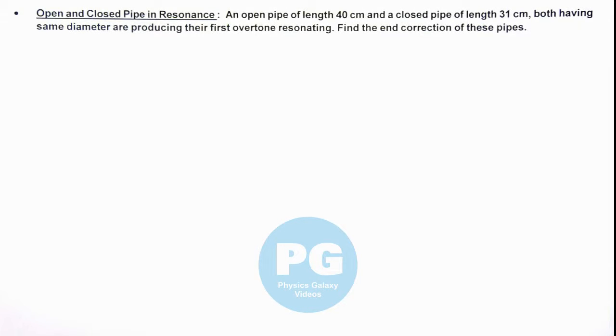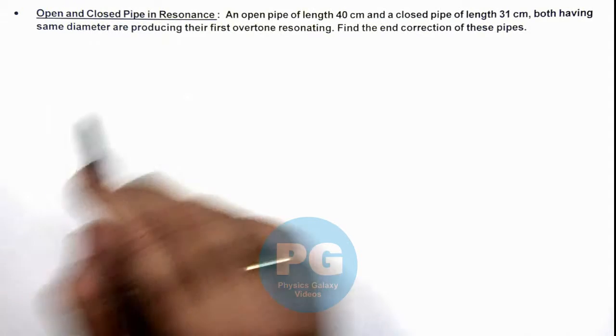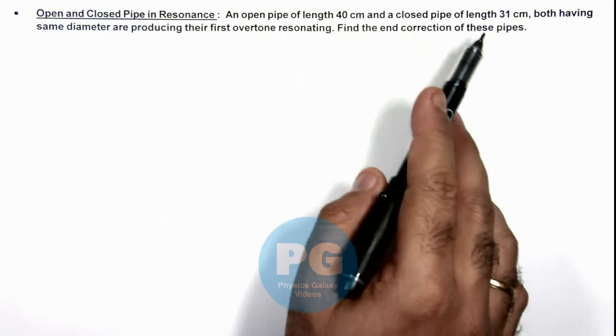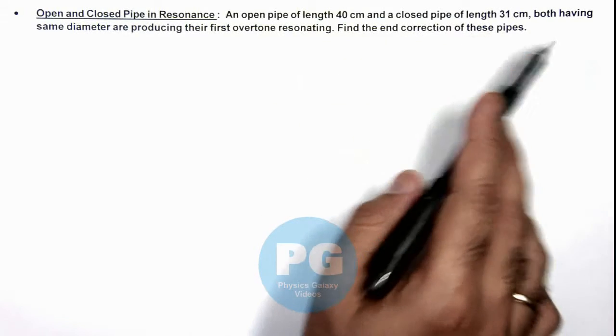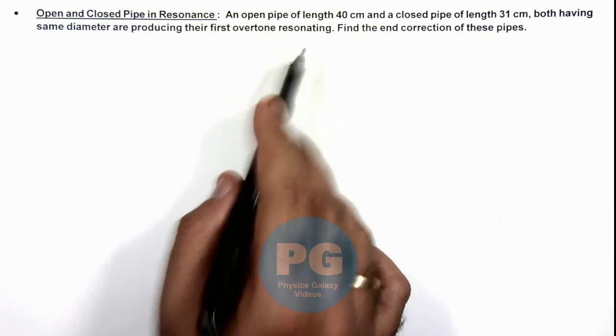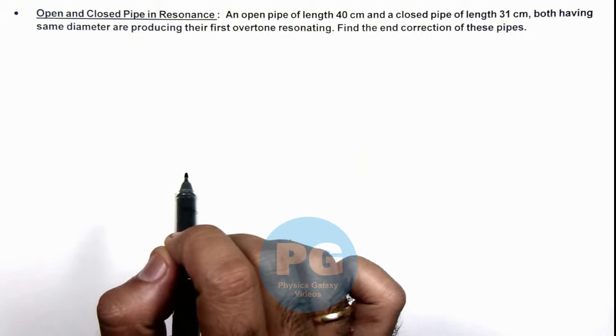In this illustration we'll discuss an open and a closed pipe in resonance. We are given that an open pipe of length 40 centimeters and a closed pipe of length 31 centimeters, both having the same diameter, are producing their first overtone resonating. We are required to find the end correction of these pipes.